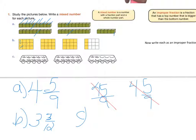Now let's try C. In C, we're looking for the number of complete trays filled with marbles — so two. Two would be my large number. I have two left over, so two again would be my numerator. And my denominator would be ten — two by five is an array of ten. So two and two-tenths is how we would say that.